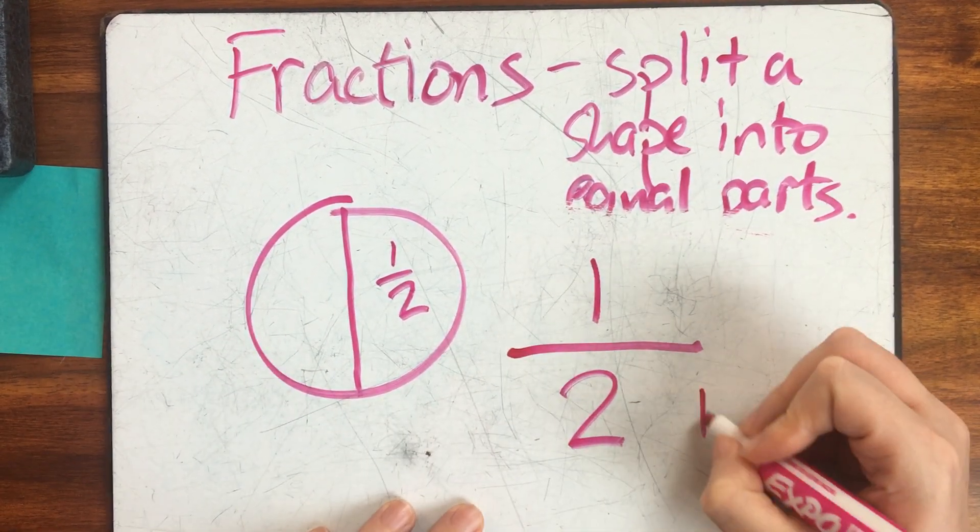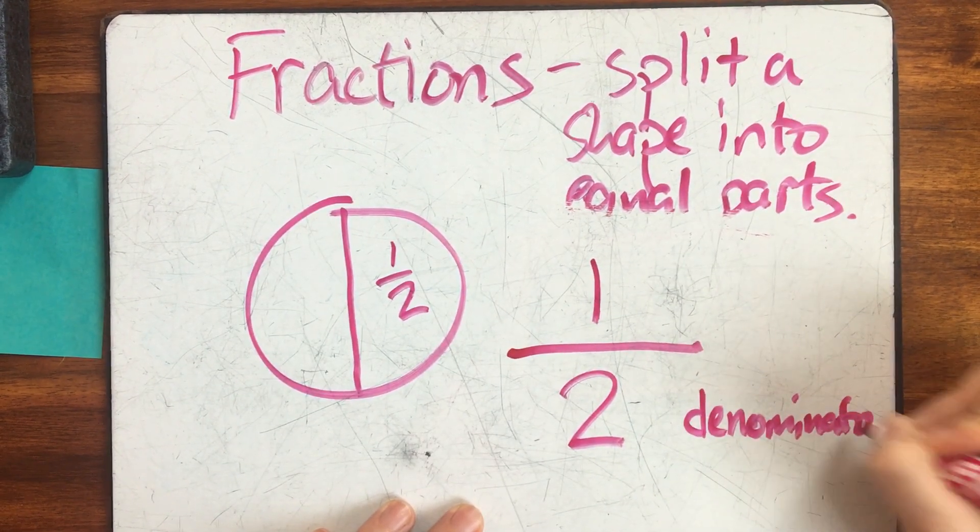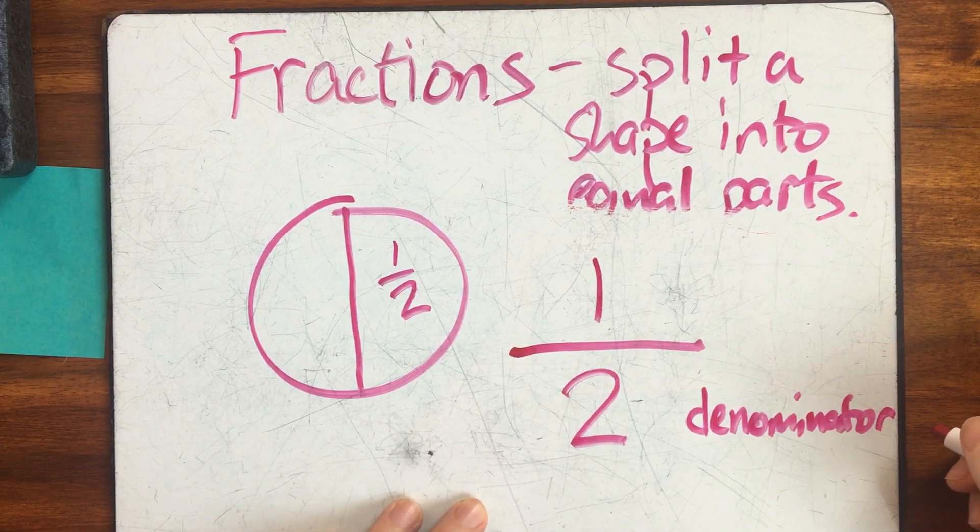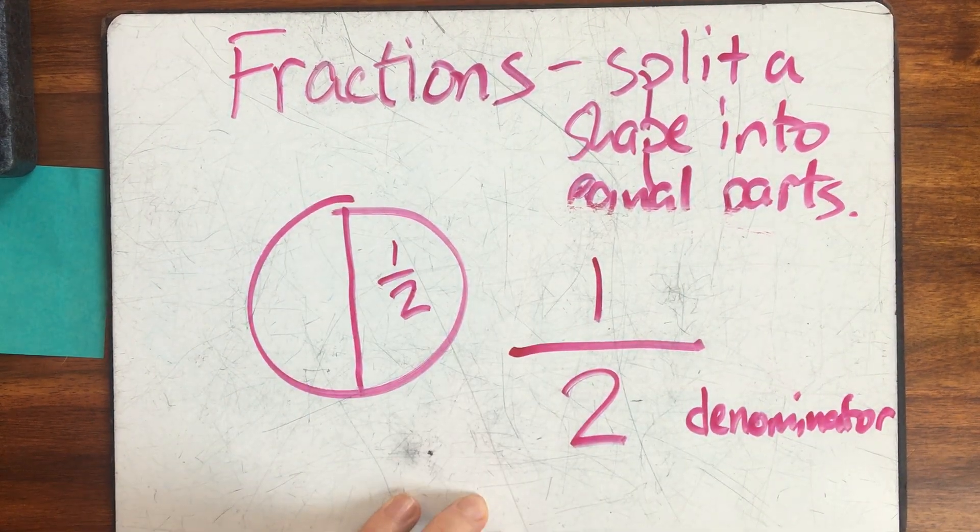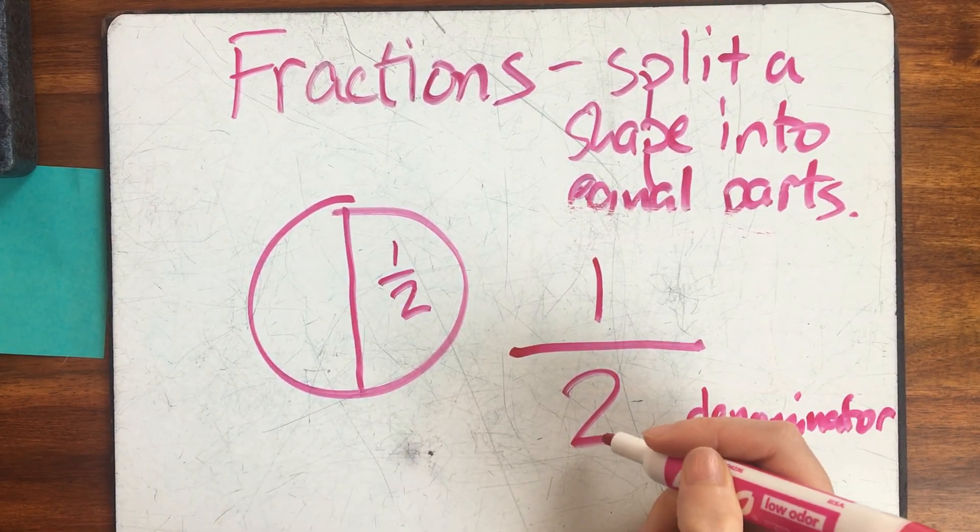The number on the bottom is called the denominator. The denominator tells how many equal parts there are in the whole. So there's one, two equal parts in this circle. So my number on the bottom is going to be two.